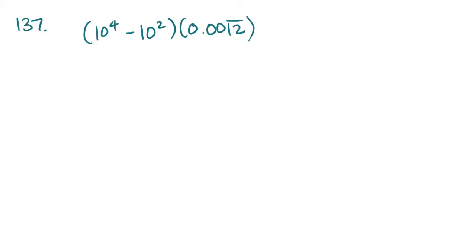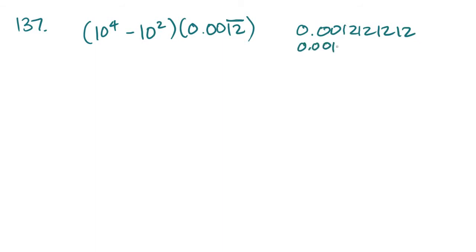Problem 137: a bar over a sequence of digits in a decimal indicates that the sequence repeats indefinitely. What the bar means is that the number will repeat. So 0.0012 with the bar is the same as saying 0.001212121212. If the bar was just above the 2, that's the same as saying 0.00122222.